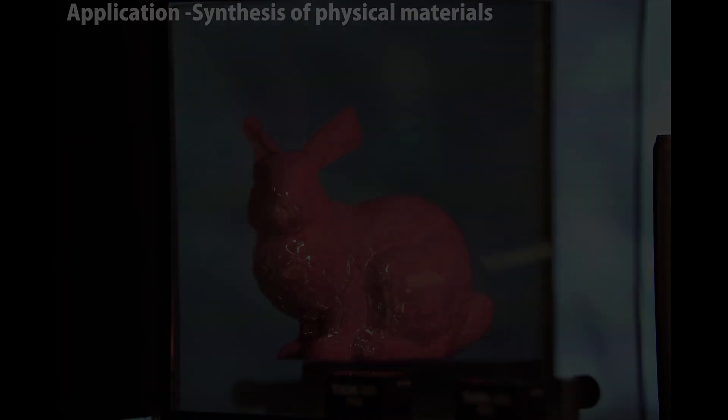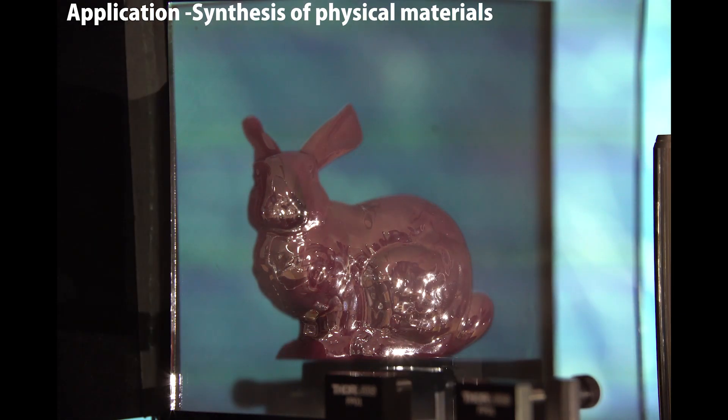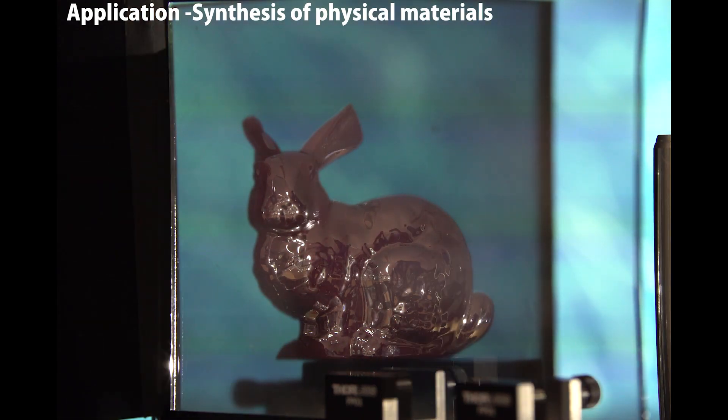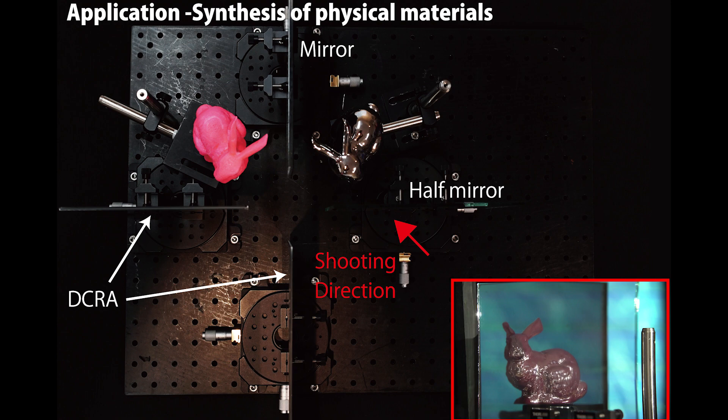Our display can mix multiple materials on object surfaces. By overlaying two rabbits with distinctive surface textures in the cloaking area, a mixed texture of both can be obtained.